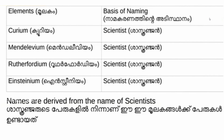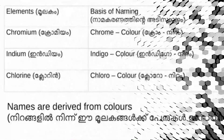Curium is named after Marie Curie. Mendelevium is named after Mendeleev. Rutherfordium is named after Rutherford. Einsteinium is named after Albert Einstein. The names of these elements are derived from the names of scientists.